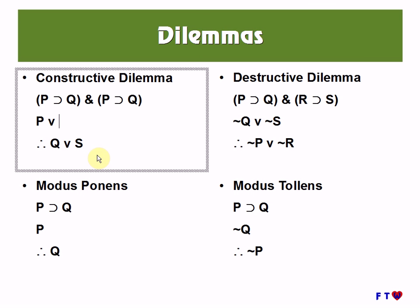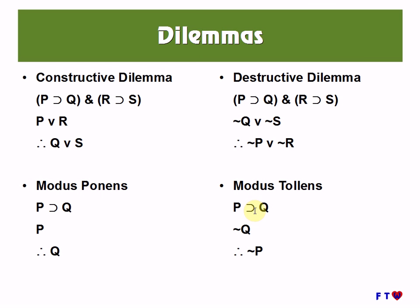Similarly, with modus tollens we have a conditional and we deny its consequent to conclude the denial of its antecedent. With destructive dilemma, we have the conjunction of two conditionals, and we say that one of their consequents is false — so we conclude that one of the antecedents is false. This is like modus tollens except with more conditionals, more consequents, and more antecedents. Just as constructive dilemma is an extended form of modus ponens, destructive dilemma is an extended form of modus tollens.